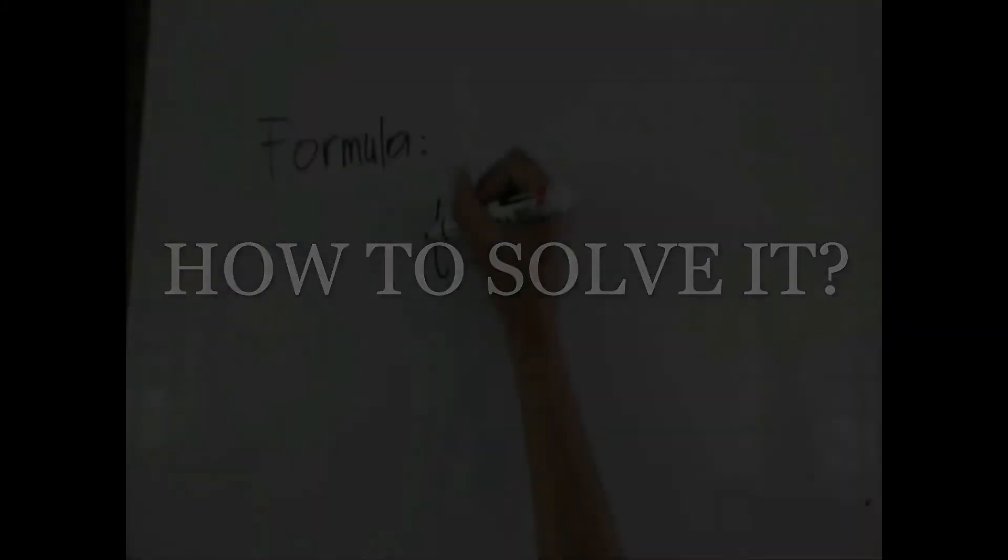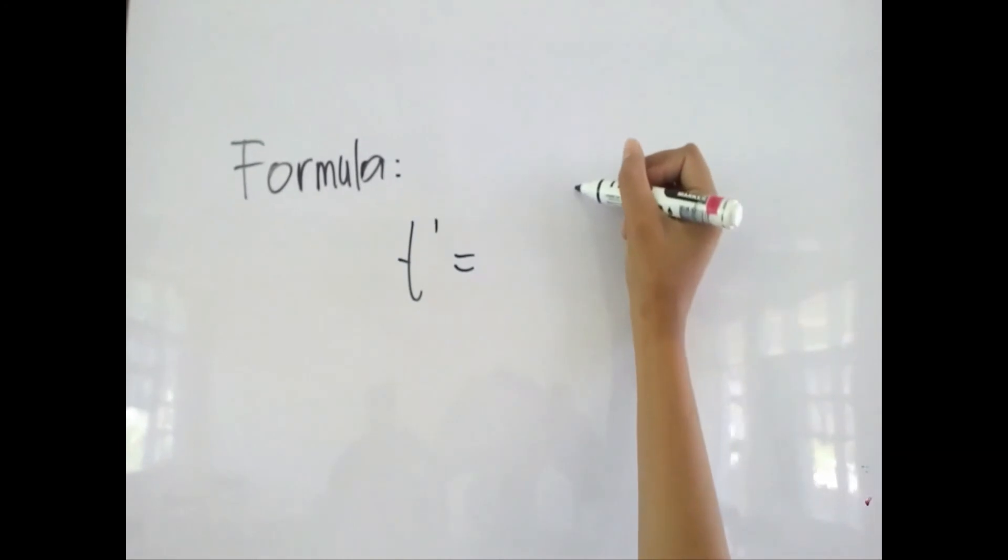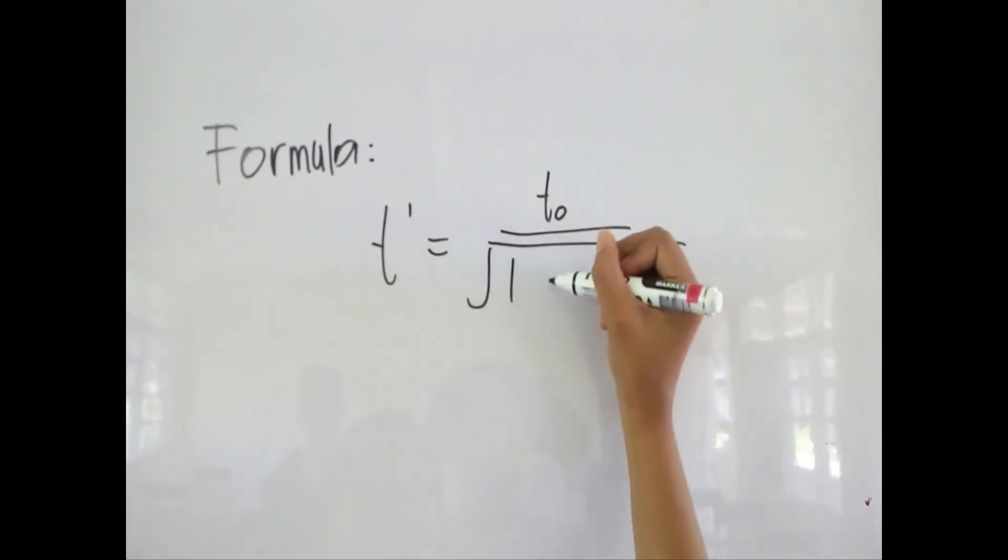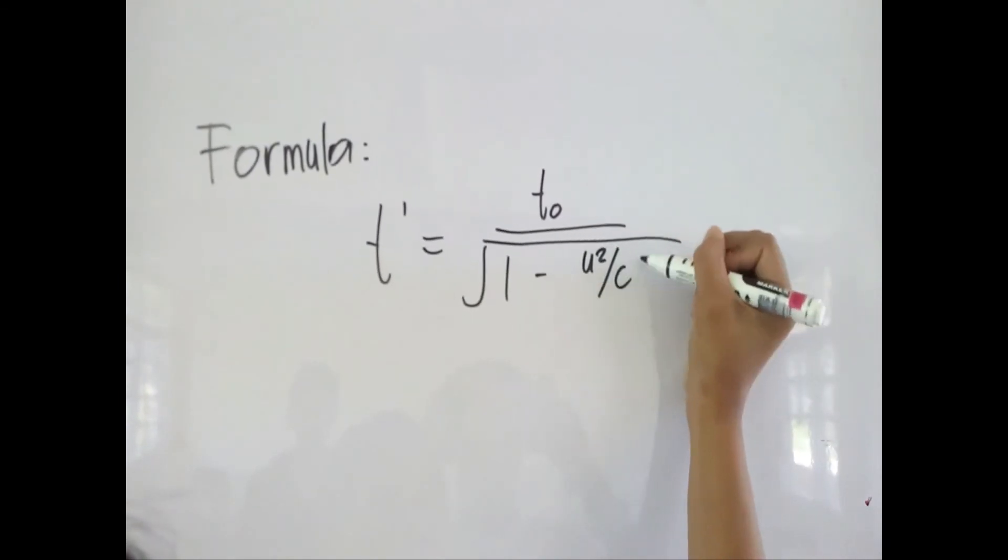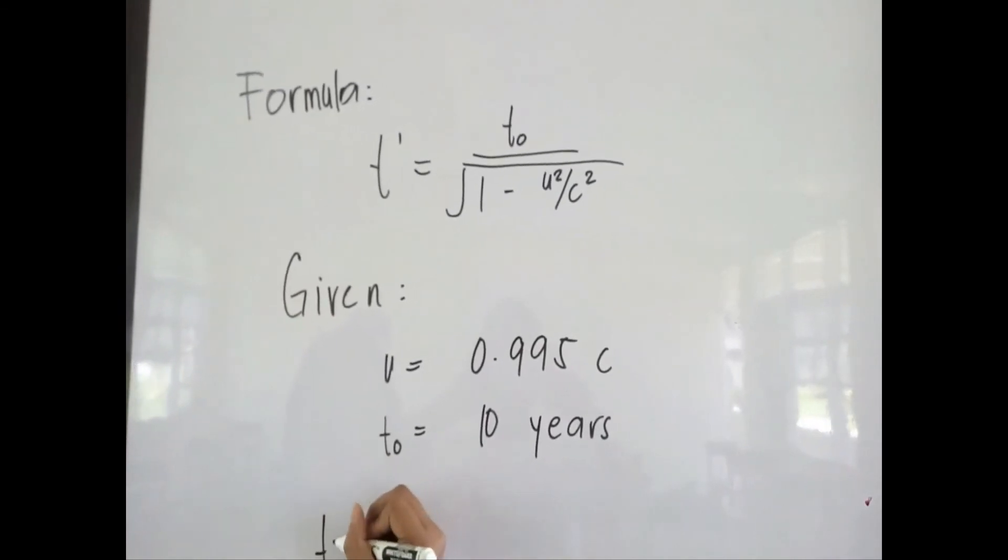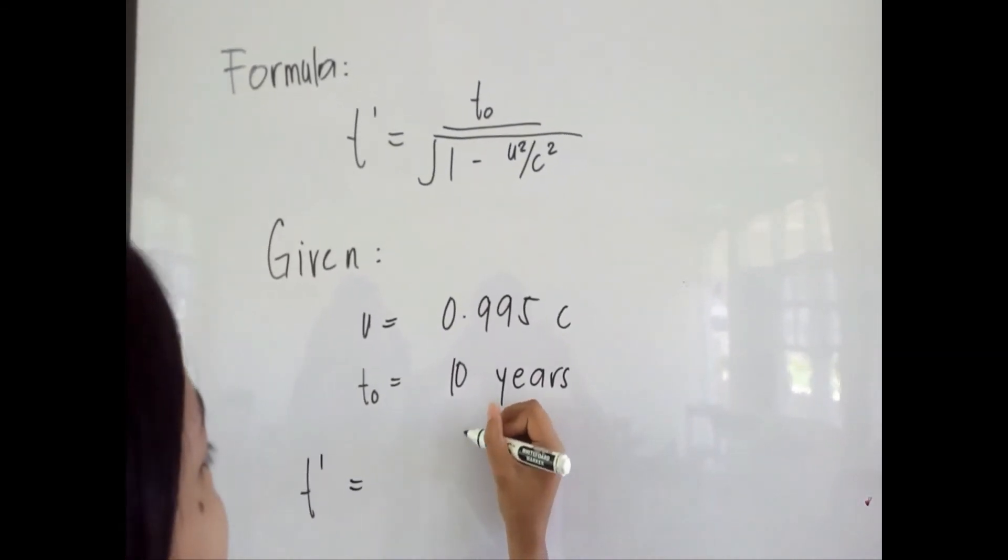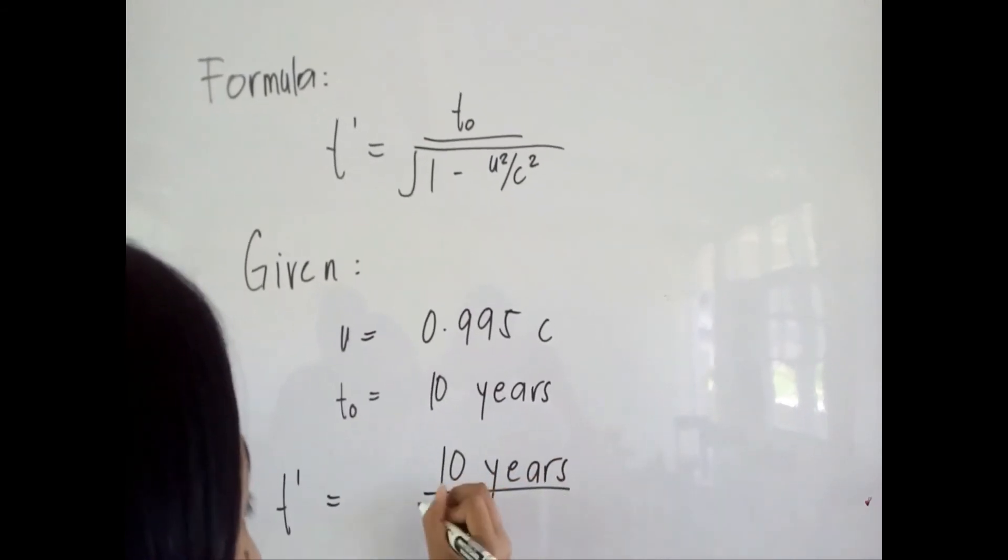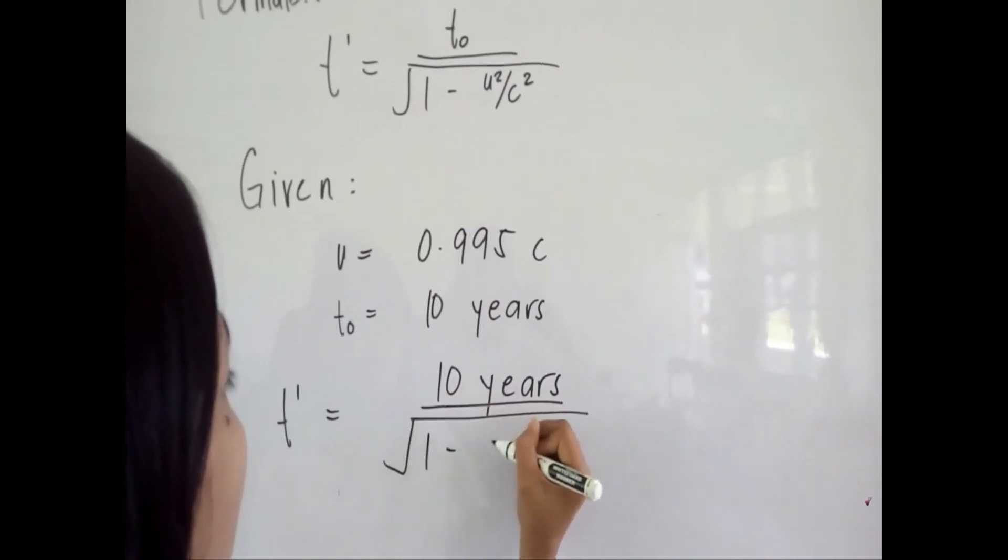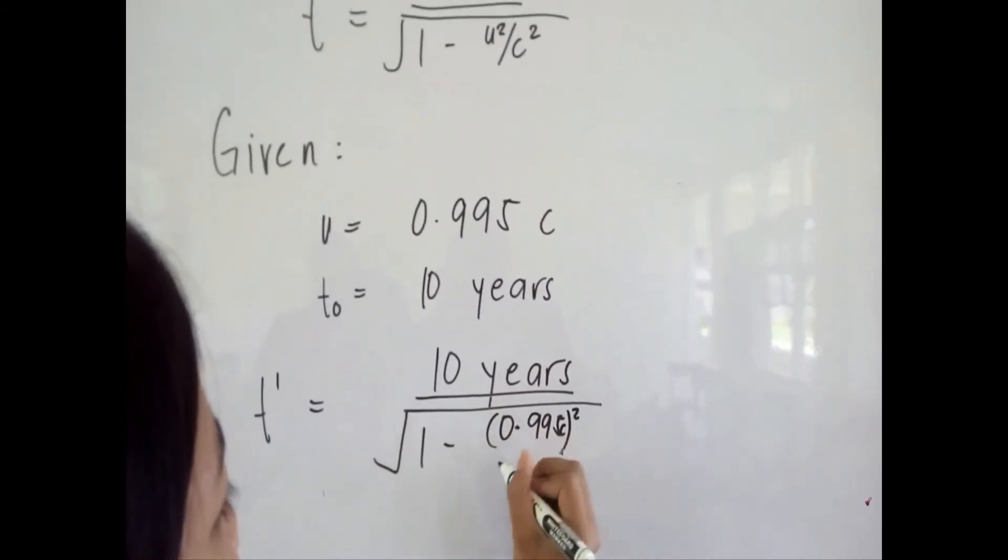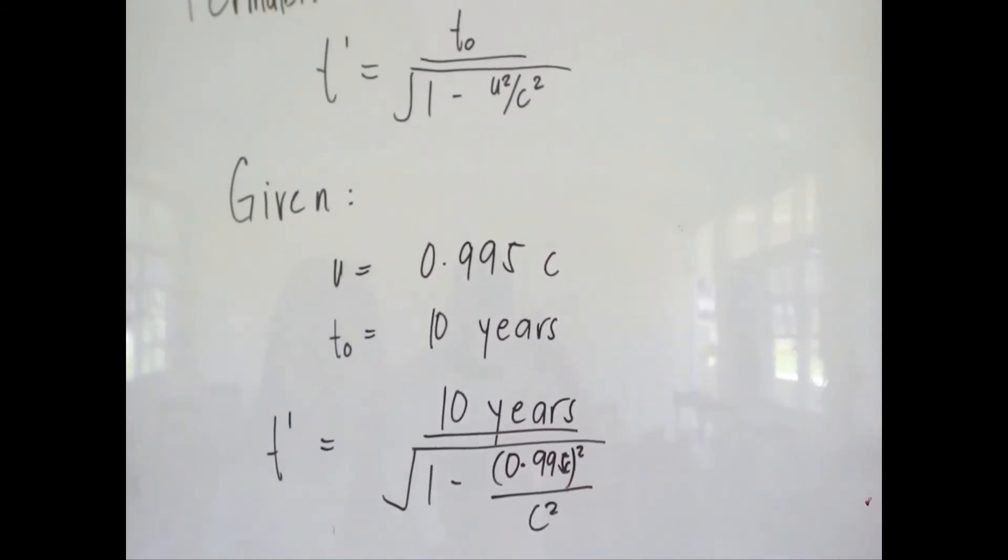To calculate it, let's use the time dilation formula which is T prime is equal to T over the square root of 1 minus U squared divided by C squared. Then we need to substitute the given value into the formula. So we have T prime is equal to 10 years divided by the square root of 1 minus 0.995c squared divided by C squared.